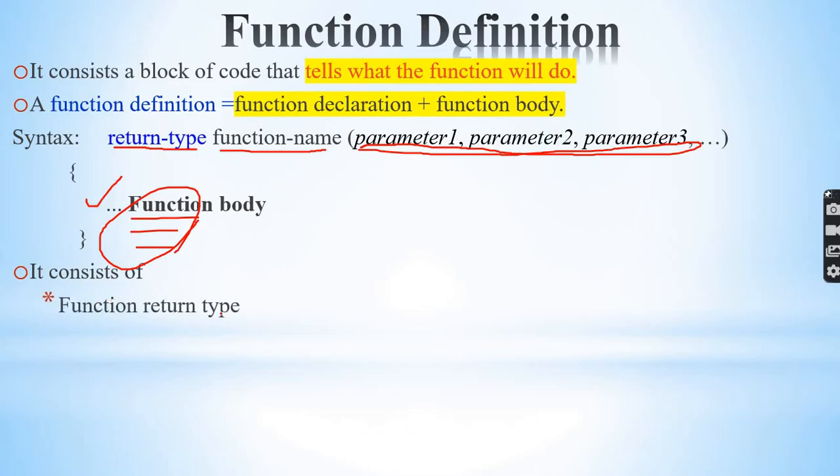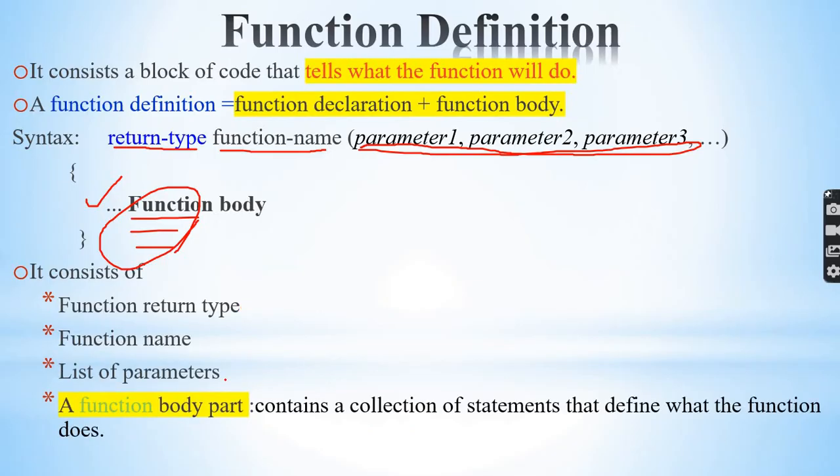Function definition consists of return type, function name, and list of parameters. This is the function declaration, and then the function body. It contains a collection of C++ statements that defines what the function does.